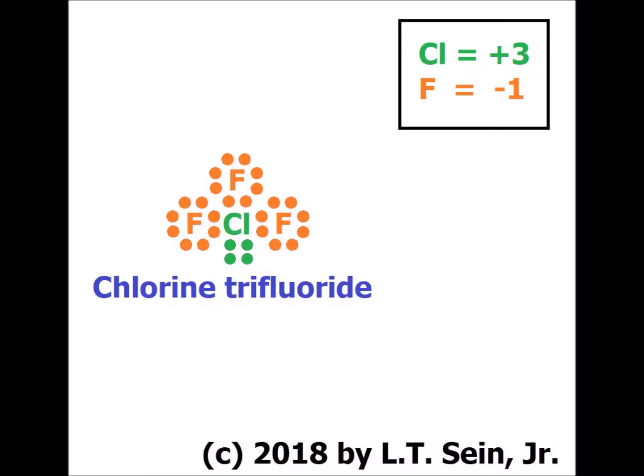Chlorine trifluoride has the molecular formula ClF3. It is a type of compound we call an interhalogen because the elements that make up the compound are entirely halogens. Each fluorine, as well as each chlorine, brings in seven valence electrons, so we have 28 electrons in this compound. Fluorine is the most electronegative of all elements, so therefore the electrons shared between fluorine and chlorine are counted towards fluorine.